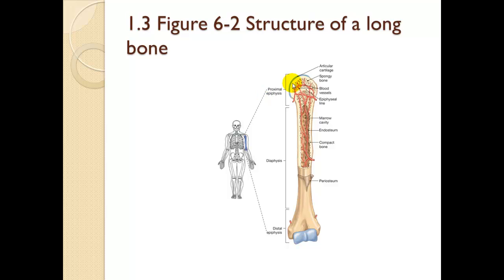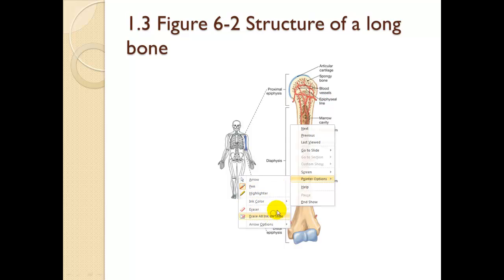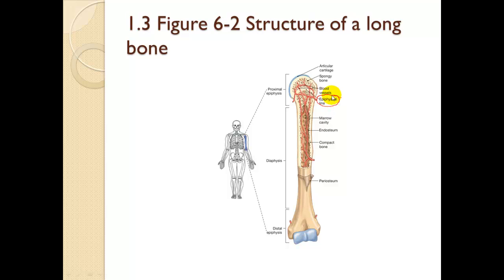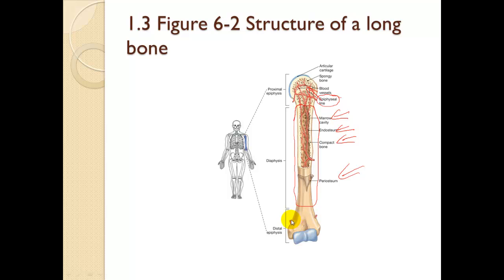Here are the areas on the diagram: we have the proximal epiphysis — essentially the head — and the epiphyseal line. In the diaphysis we have the marrow cavity and the main shaft of the bone. The endosteum is internal. The compact bone makes up the circular area surrounding the bone marrow. The periosteum is the covering on the outside. And down here is the distal epiphysis, with the epiphyseal line approximately in that region.